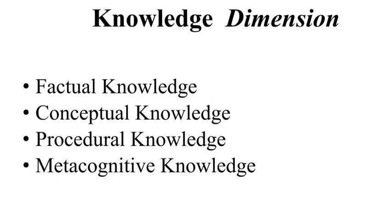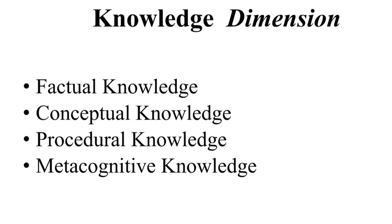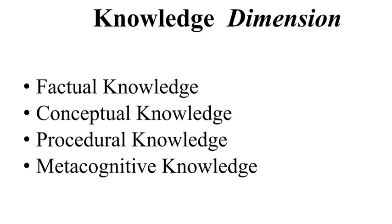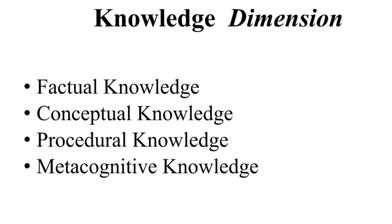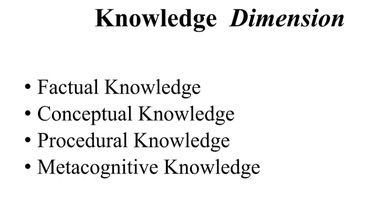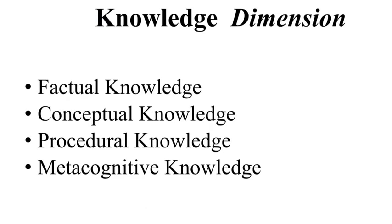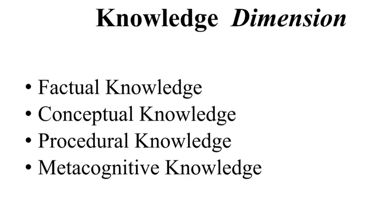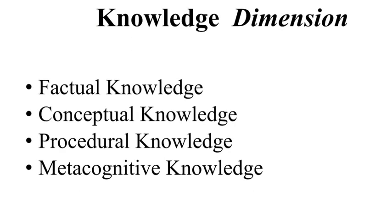Factual knowledge is the basic, ground-level stuff, like definitions and basic facts. Conceptual knowledge has to do with the relationships between the bits of factual knowledge — like how they're connected, how they can be classified, and how stuff works. Procedural knowledge is knowledge of process, or how to do something. And finally, metacognitive knowledge is sort of tricky. As the name might imply, it's knowledge about knowledge — like whether you can monitor your own thinking, or you know how your learning process works.